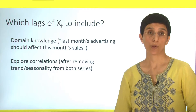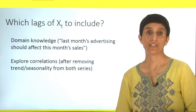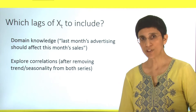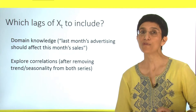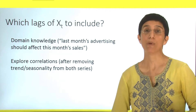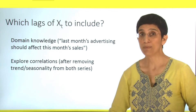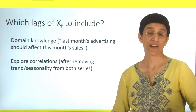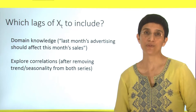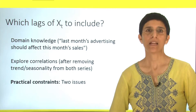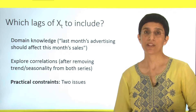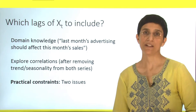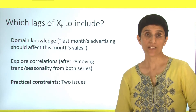Sometimes you'd simply use exploration: try different correlations at different lags and find the ones you need to include. Make sure to do this only after you remove trend and seasonality from both series. For example, if both series follow the same trend, you might find very high correlations that are simply due to the trend. Two issues that we need to think about carefully are related to data availability.